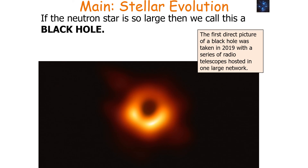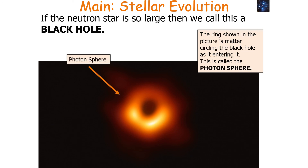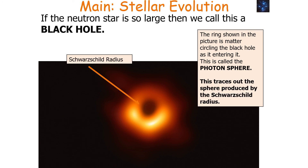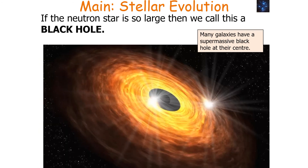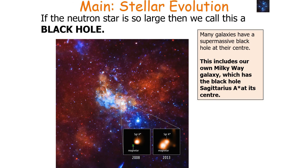We can actually have a picture of a black hole — this is the first direct picture taken in 2019 with a series of radio telescopes hosted in one large network. The ring shown in the picture is matter circling the black hole as it enters it — we call this the photon sphere — and this allows you to trace out the Schwarzschild radius. It's important to note that many galaxies have a supermassive black hole at their centre, including our own Milky Way galaxy, which has a black hole — Sagittarius A* — at its centre.